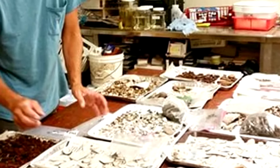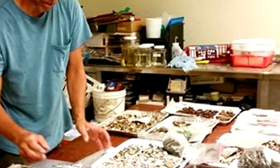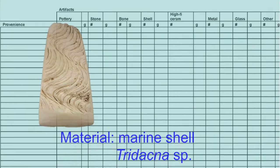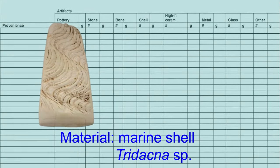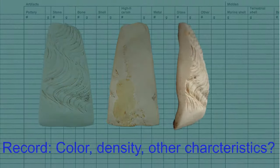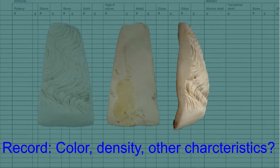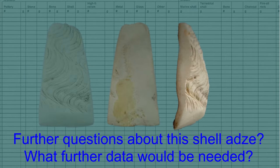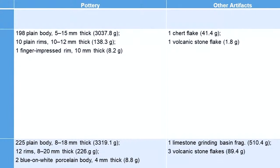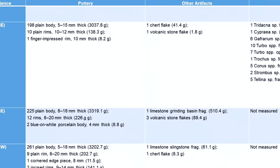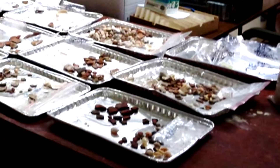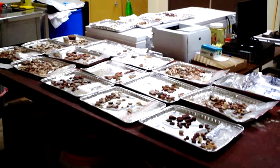Technical procedures in the laboratory often begin with standard recording of material categories, counts, weights, and measurements. These data sets could be analyzed or interpreted in various ways. Depending on the results, further observations and data gathering procedures could be pursued.